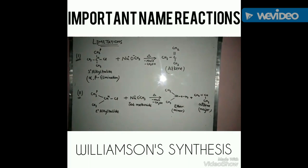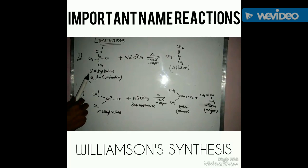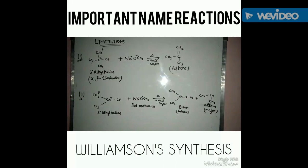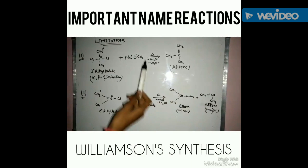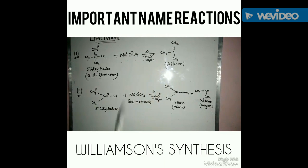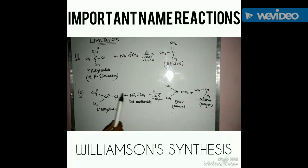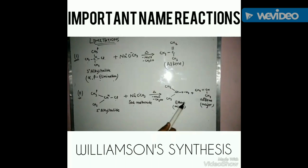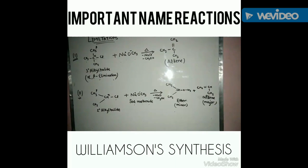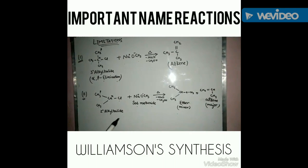Here are some limitations of Williamson synthesis. If we take a 3° alkyl halide such as (CH₃)₃CCl and react it with NaOCH₃, the reaction proceeds through elimination rather than substitution, giving an alkene. Cl eliminates from the alpha carbon and an H atom eliminates from the beta carbon. Similarly, if a 2° alkyl halide is used, both an ether and an alkene are formed, but the ether is only a minor product. Therefore, ethers cannot be reliably synthesized by this method using 2° or 3° alkyl halides — these are the limitations of Williamson synthesis.